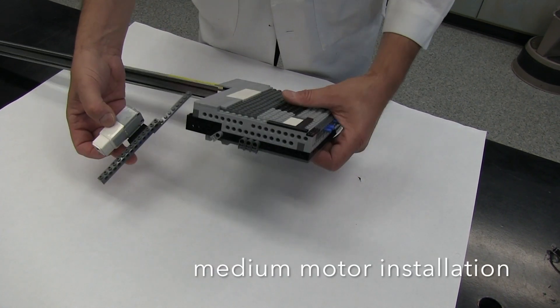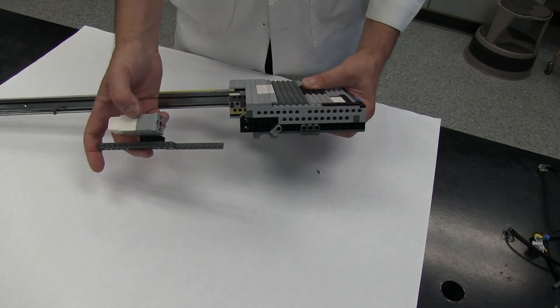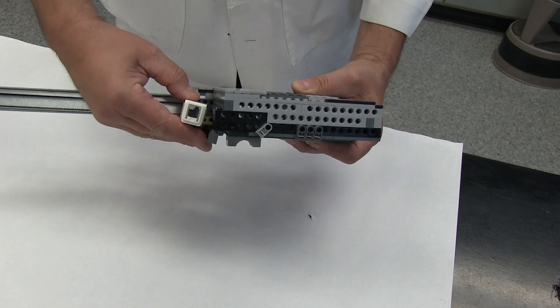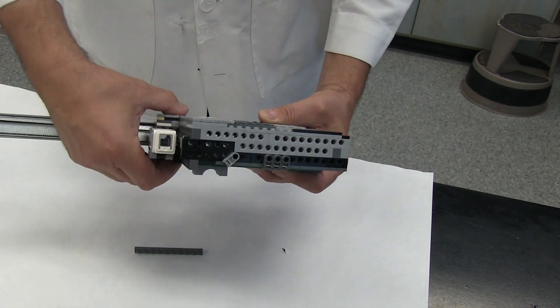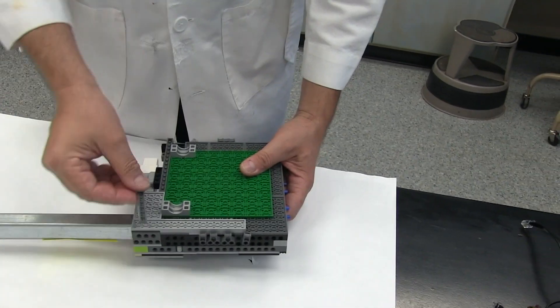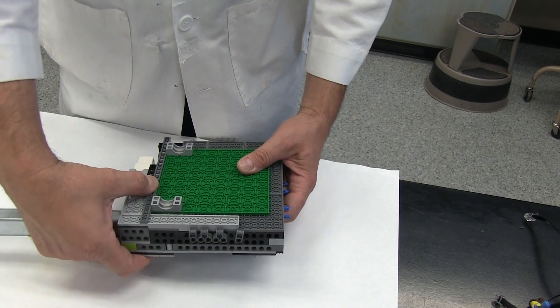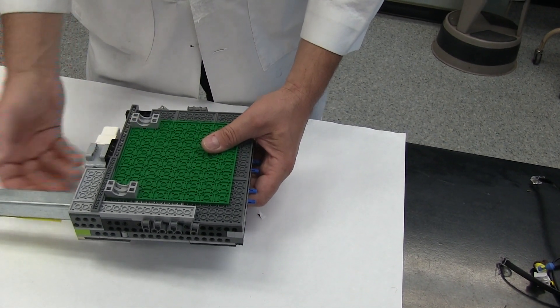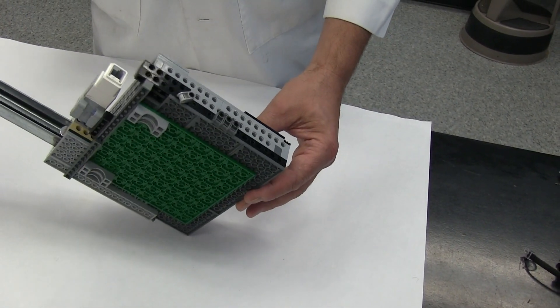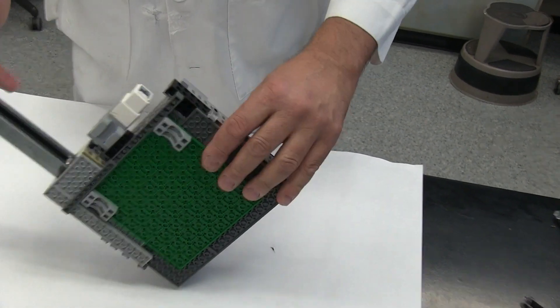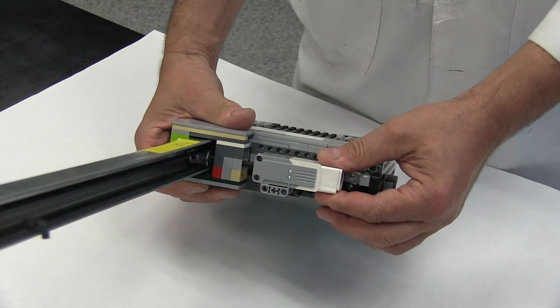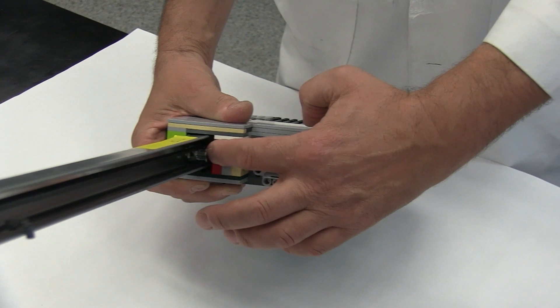In this next step, we will install the medium motor into the shaft that is connected to the pulley. You can see that the motor is connected to the shaft and the pulley. We add an extra piece on the bottom of the unit to ensure that the motor is securely placed. Here you can see how the medium motor is securely affixed to the pulley unit.